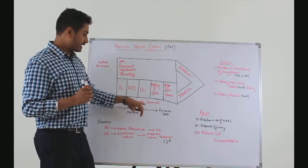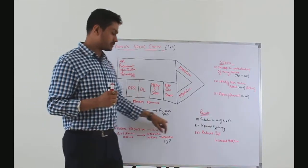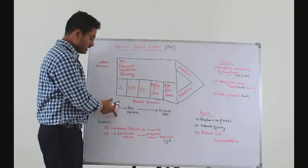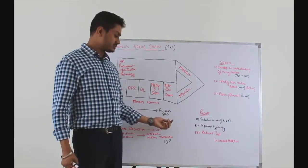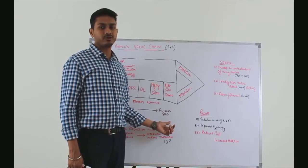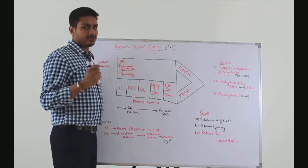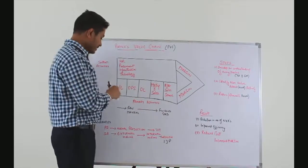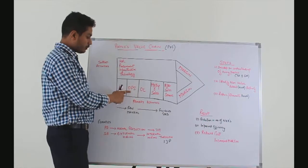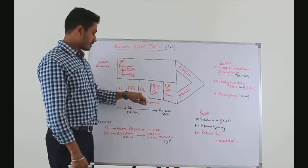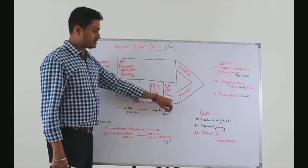Primary activities basically cover the length of the entire production process. Raw materials enter the premises of a company and are then processed, converted and sold in the form of a finished good. The primary activity has five sub-elements: IL stands for inbound logistics, OPS stands for operations, OL is outbound logistics, marketing and sales, and after sales service.